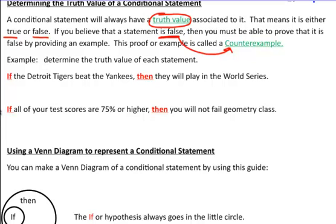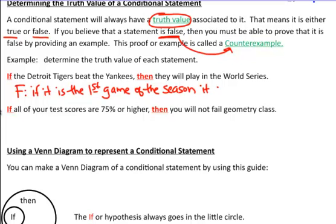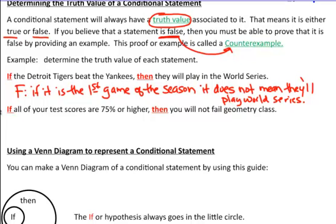For example: 'If the Detroit Tigers beat the Yankees, then they will play in the World Series.' True or false? This is actually a false statement. Why? What if it's the first game of the season? If it's the first game of the season and they beat the Yankees, that does not necessarily mean they are going to win the World Series. So: false — if it is the first game of the season, it does not mean they will play in the World Series. A conditional statement must always be true, and if you can give just one example of why it would not be true, that's your counter example.